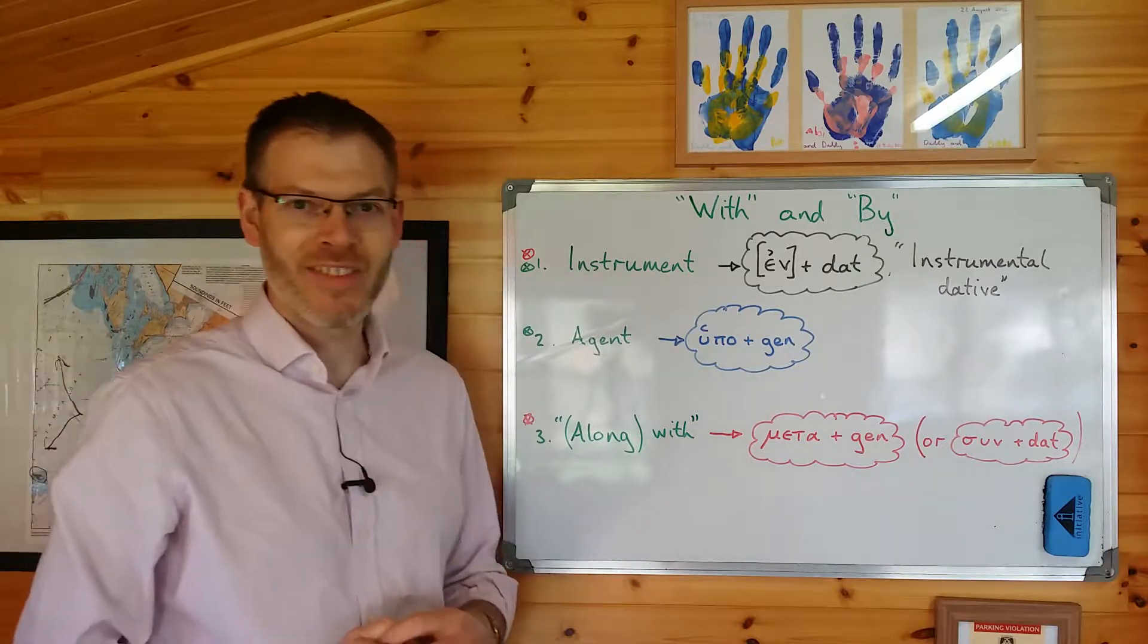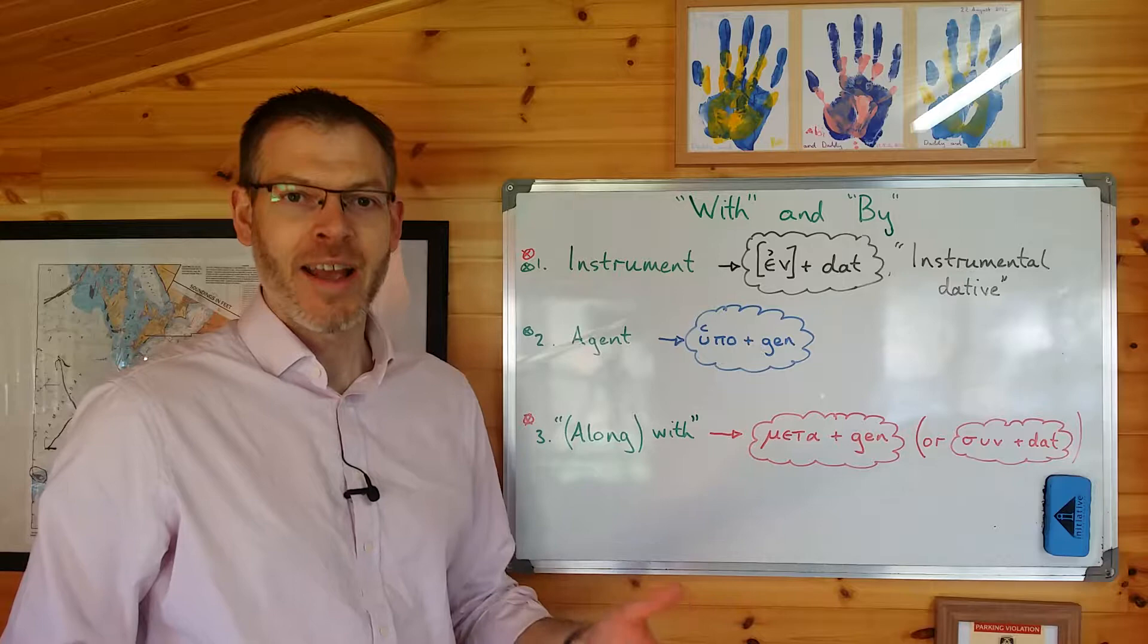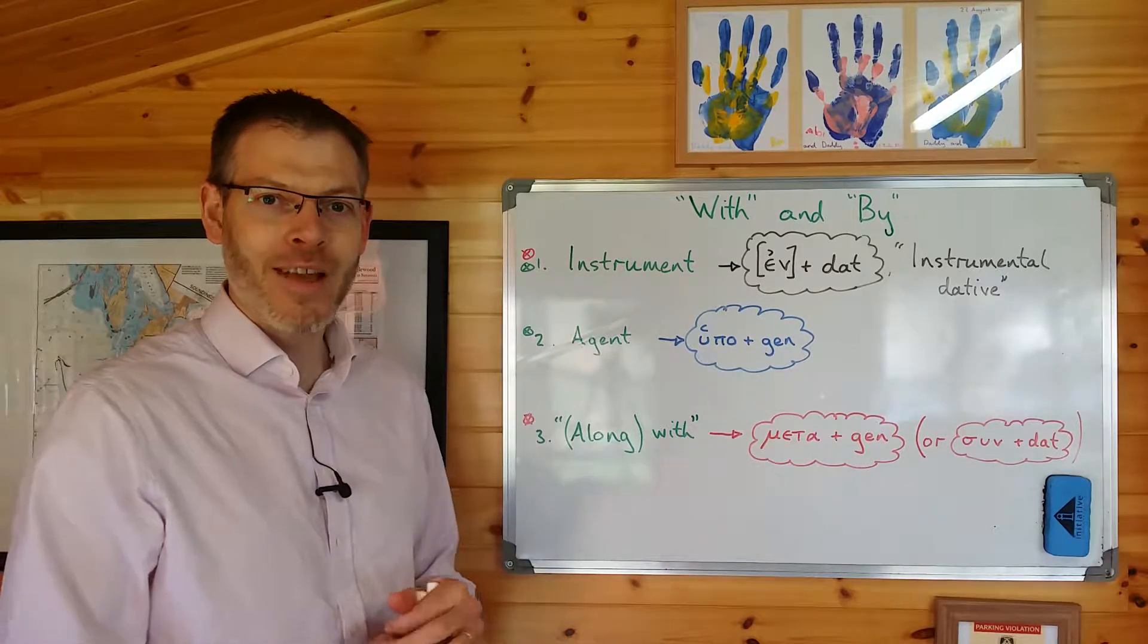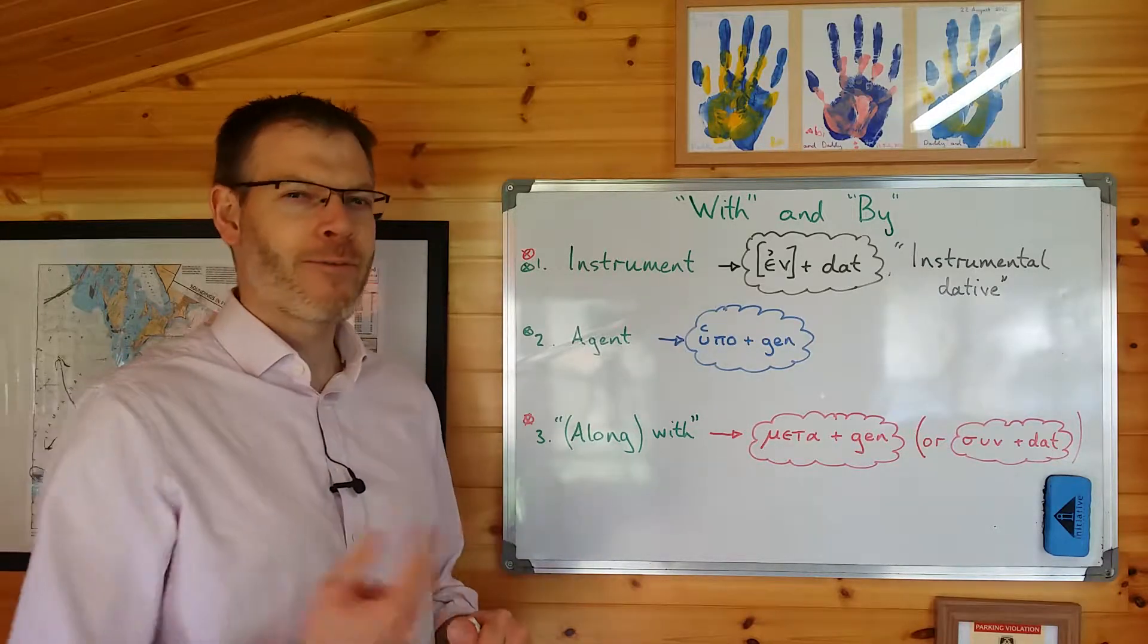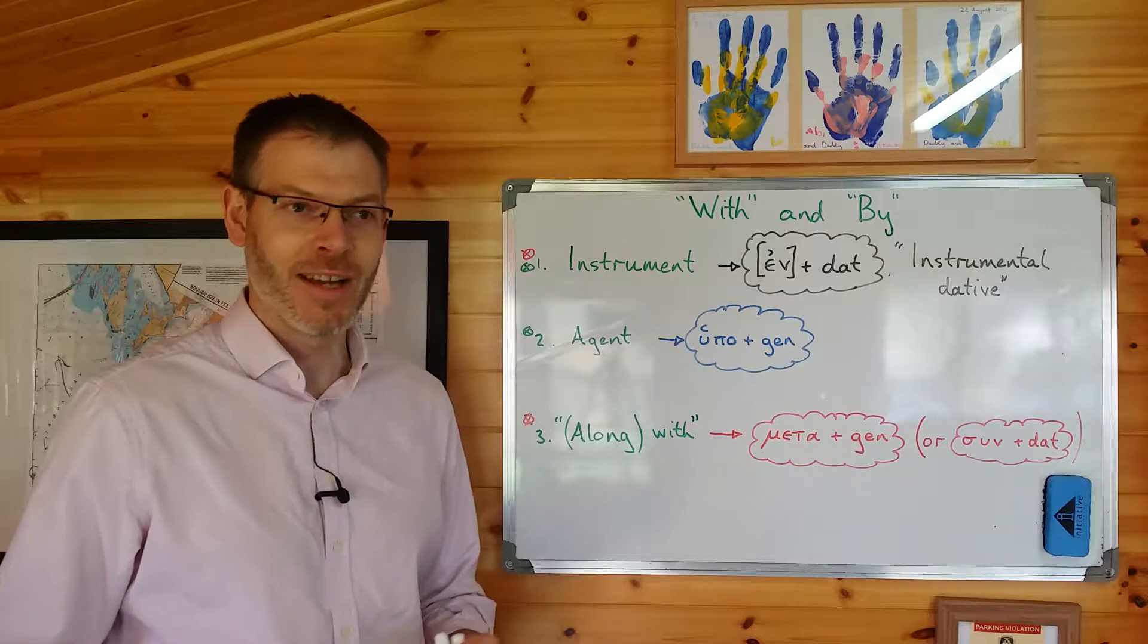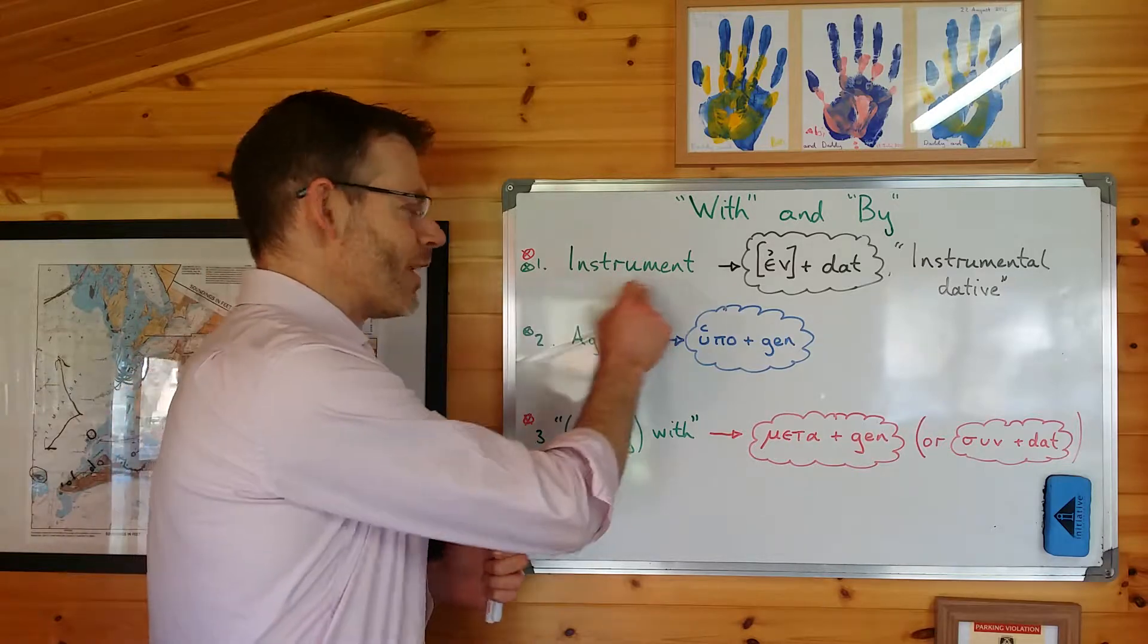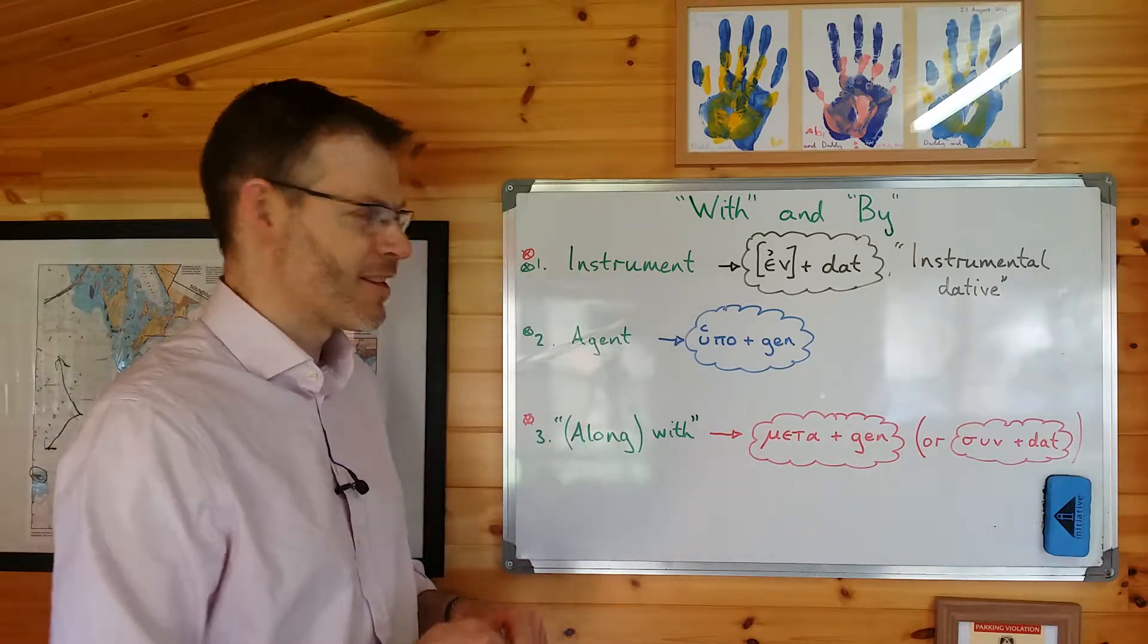First, let's talk about the instrument. The instrument, as Duff explains, is an inanimate thing by means of which an action is performed. So the one I like to use is, I was hit by a rock, or I was hit with a rock. In those two sentences, the phrase by a rock, or with a rock, describes an inanimate object, a thing that is not performing the action, but is the means by which the action is performed. I was hit is the action, and by a rock, or with a rock, it's an inanimate thing. We call it an instrument by means of which the action is performed. It might help you to think of this as like a tool. I hit my thumb with a hammer, or my thumb was hit by a hammer. In both those cases, it's like an inanimate thing that you crunch your thumb with, and it's painful.